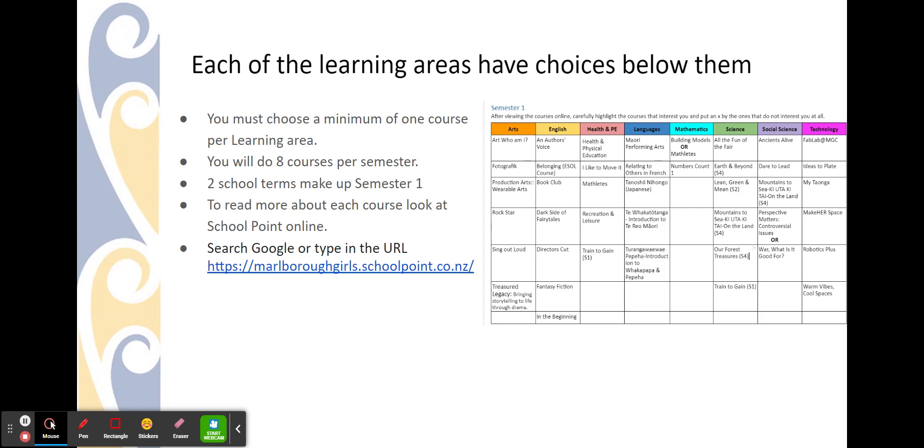So your child will do eight courses based on the learning areas. A course is made up of two terms. This is what we call semester one. To read more about each course, you need to look at our online tool, School Point.